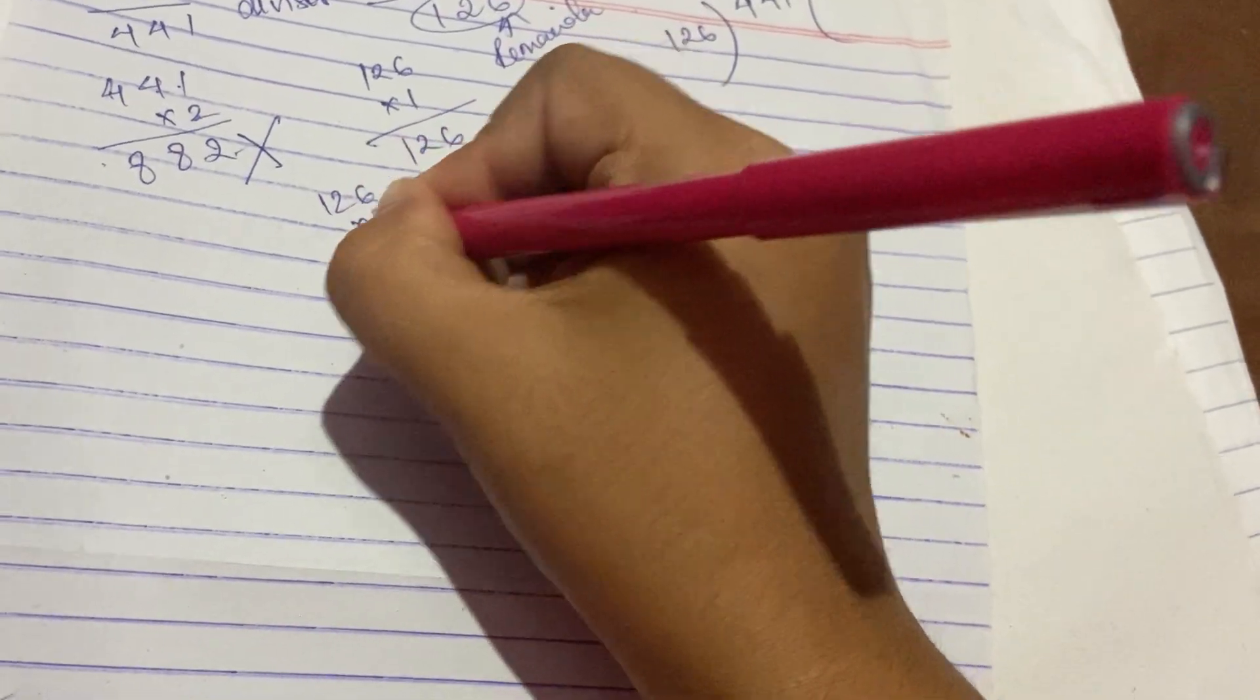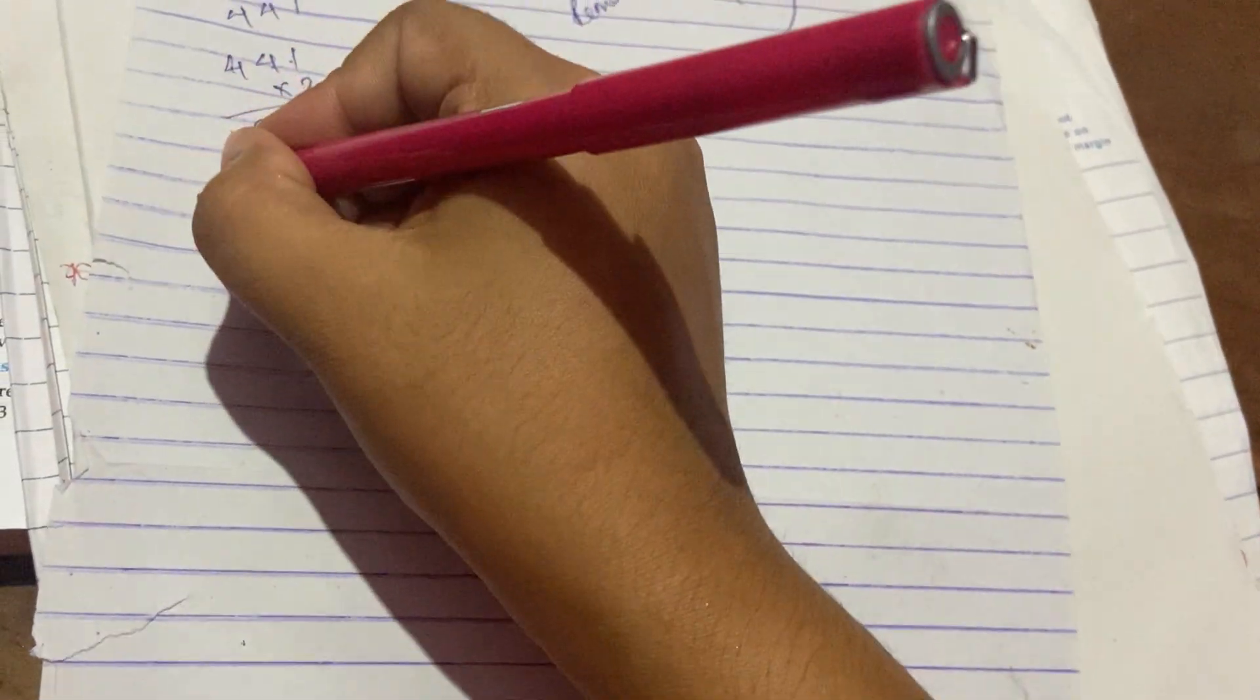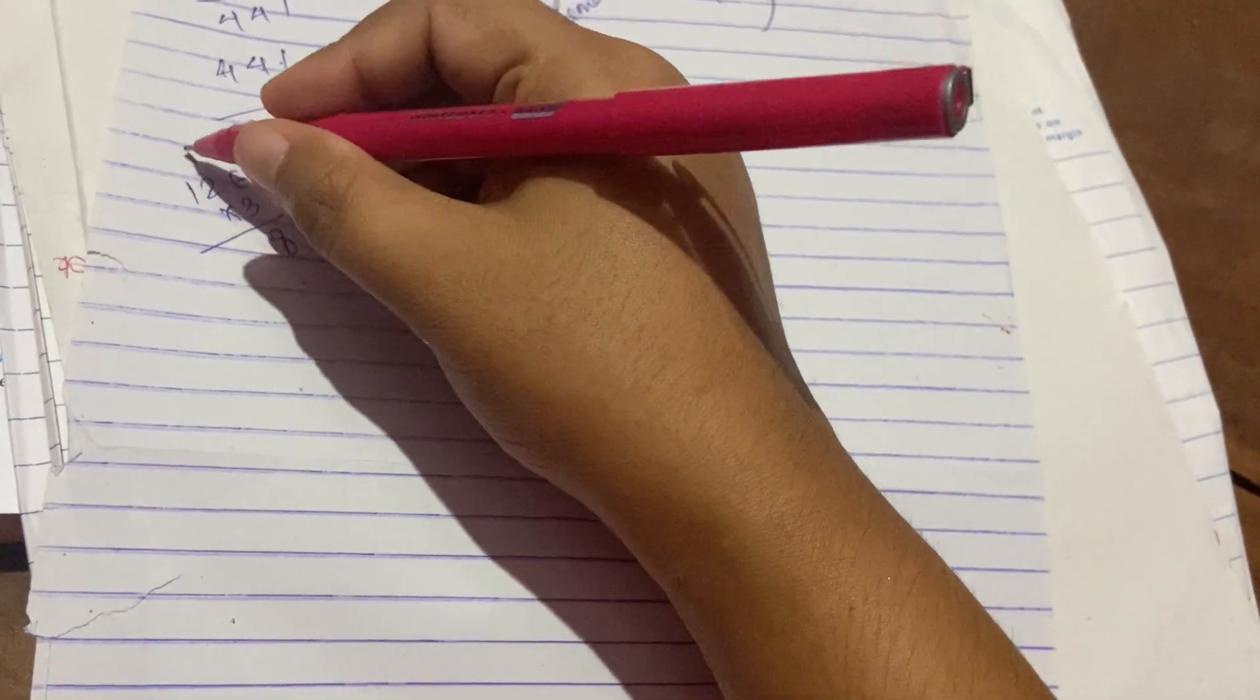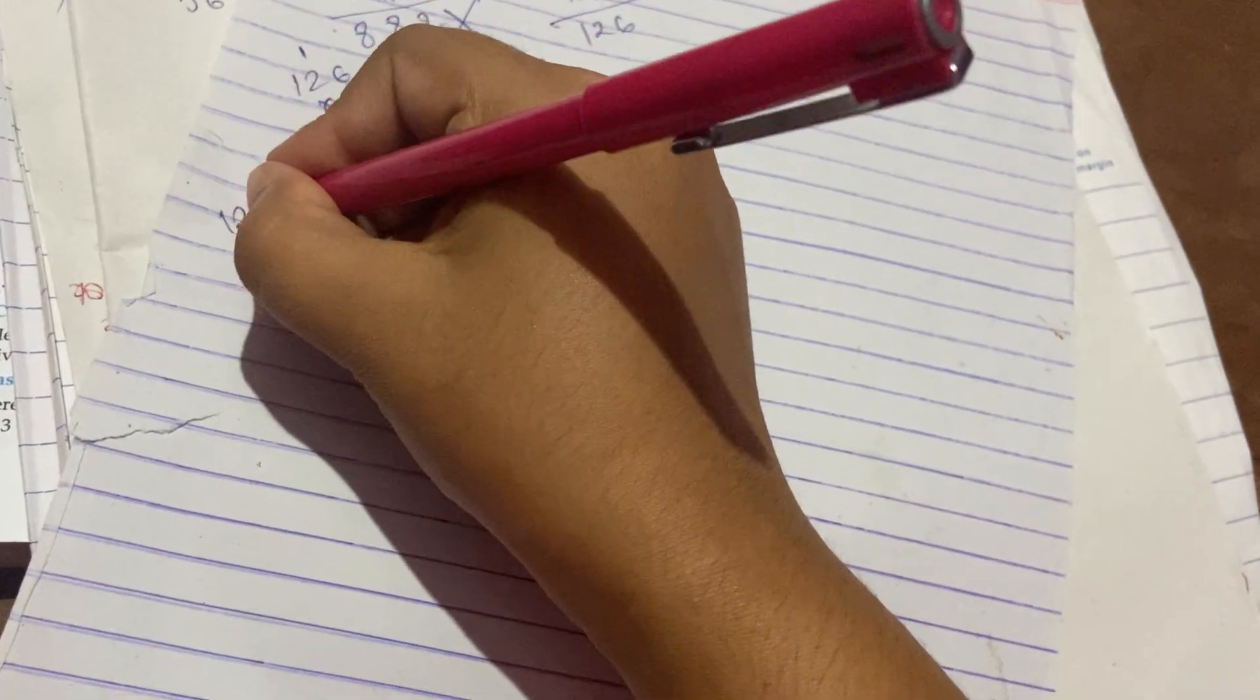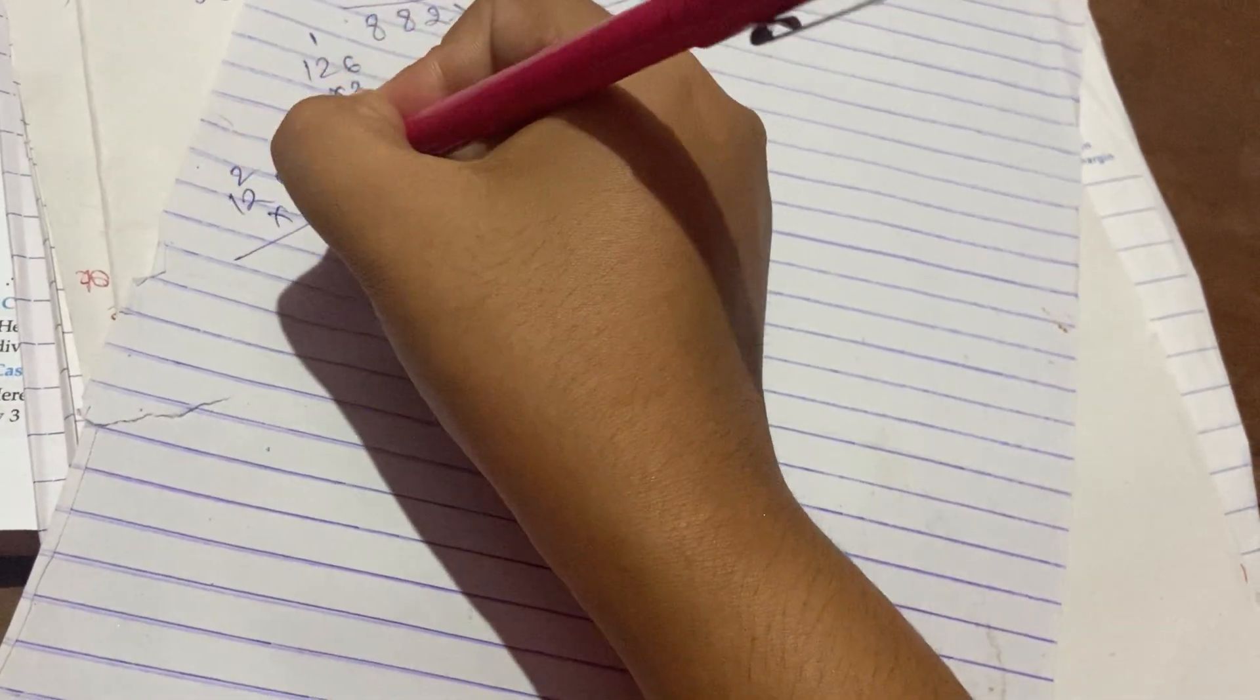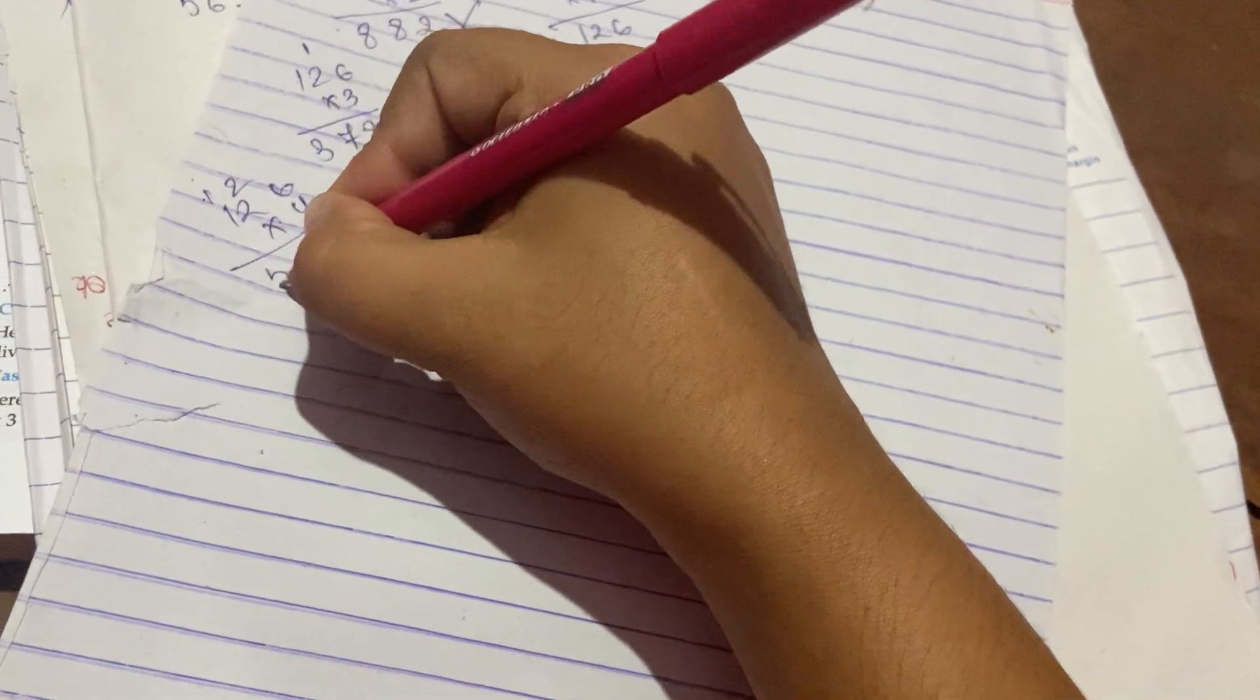126 into 3: 3 into 6 is 18 (1 in hand), 3 into 2 is 6 plus 1 is 7, 3 into 1 is 3, which equals 378. 126 into 4: 4 into 6 is 24 (20, with 2 in hand), 4 into 2 is 8 plus 2 is 10 (1 in hand), 4 into 1 is 4 plus 1 is 5, which equals 504.